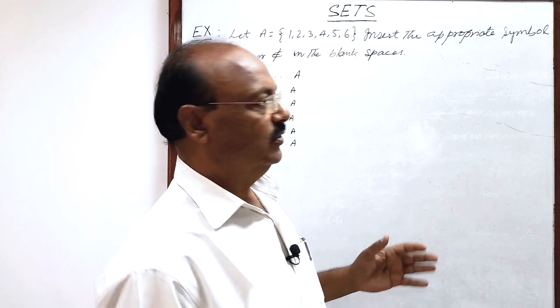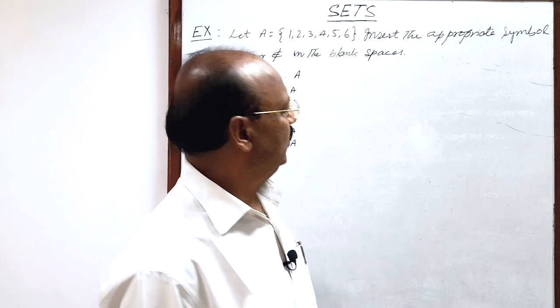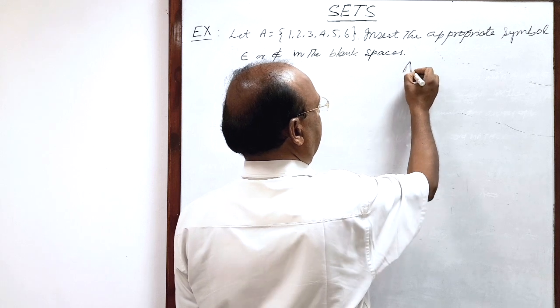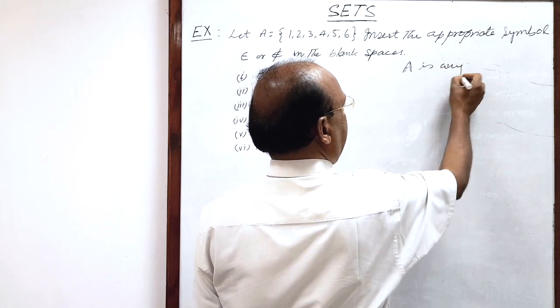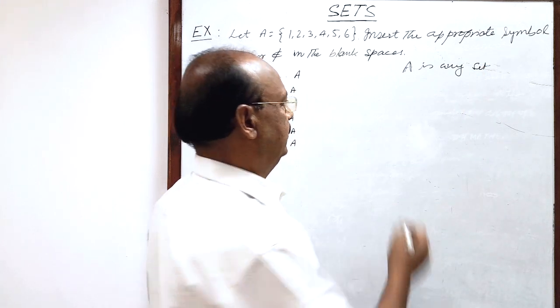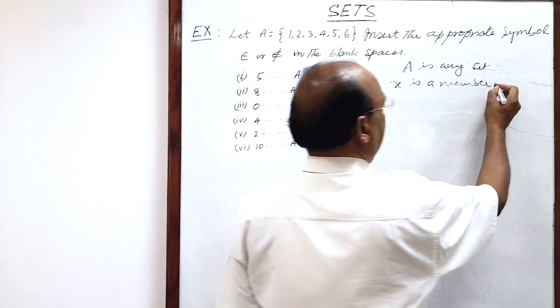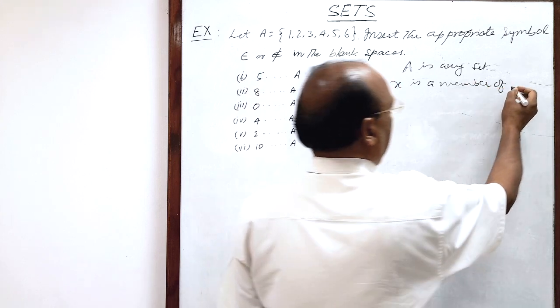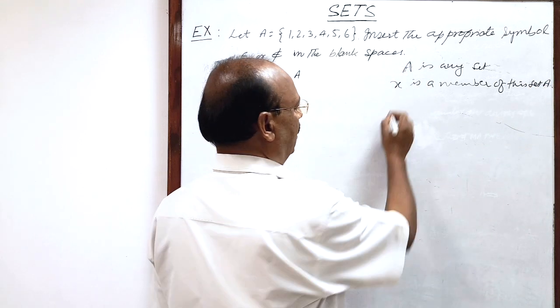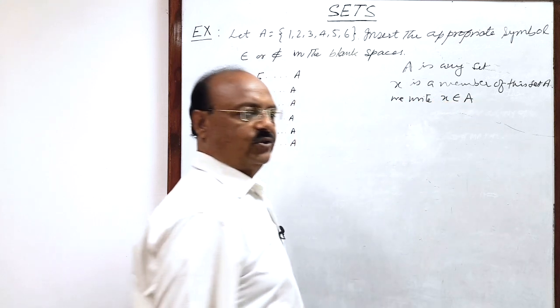There is a symbol for mentioning whether an element is belonging to the set or not. As for example, suppose A is any set and any element x is a member of this set. x is a member or element of this set A. Then how we will write? We write x belonging to A, x belongs to A. This is the notation used for belongs to.